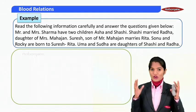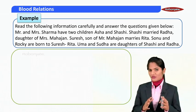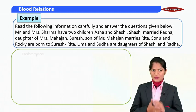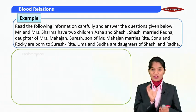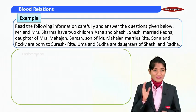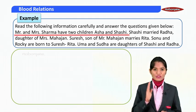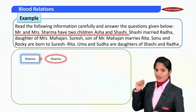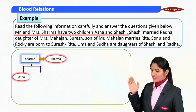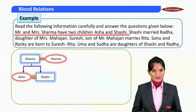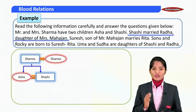Such a long passage with so many characters — don't get confused, I'll simplify this problem for you. We'll see this problem in small parts. First part: Mr. and Mrs. Sharma have two children, so they have two children — one is Asha and one is Shashi. Shashi married Radha, daughter of Mrs. Mahajan.